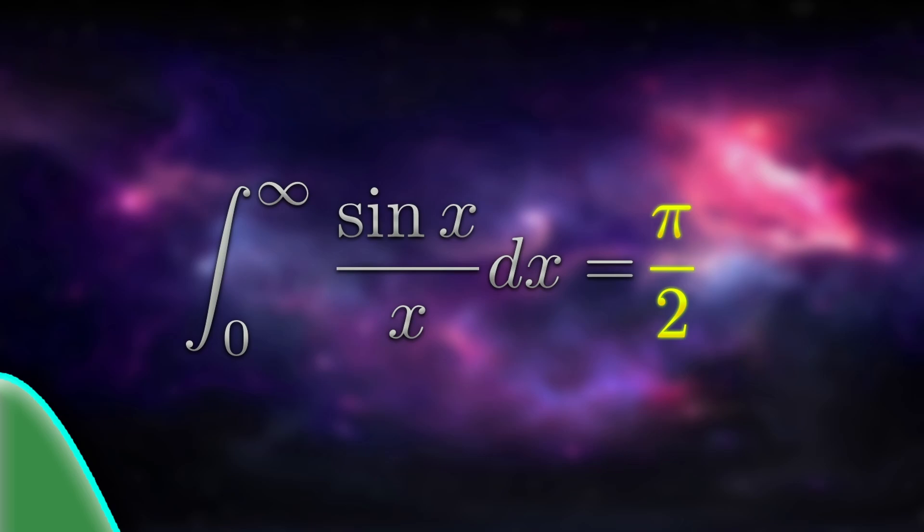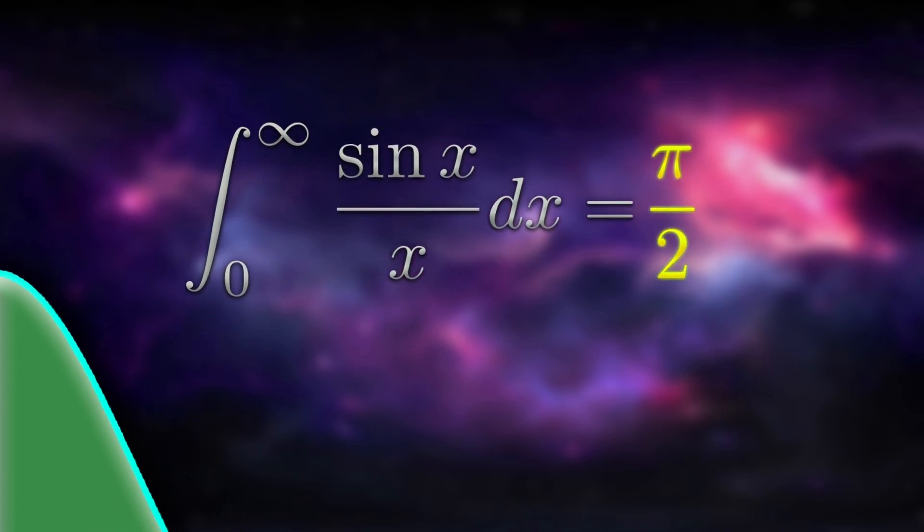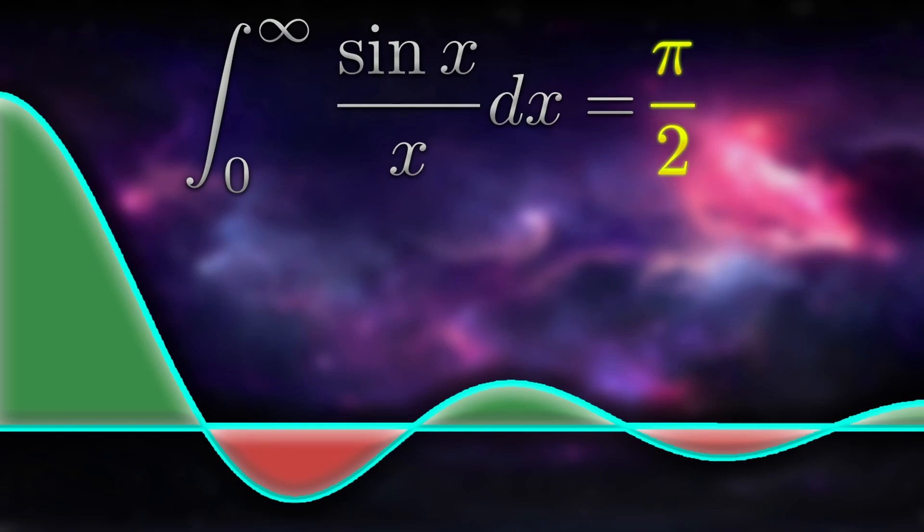This is the total area of this shape, where the green is positive and the red is negative. The truly remarkable thing about Feynman's trick is that it allows us to solve problems which would not only be difficult using standard methods, but in fact would be impossible using standard methods. This problem being an example of just that.